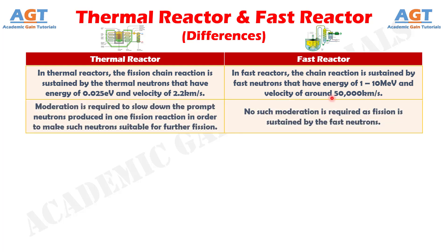Number 2. In thermal reactors, moderation is required to slow down the prompt neutrons produced in one fission reaction in order to make such neutrons suitable for further fission. Whereas, in fast reactors, no such moderation is required as fission is sustained by the fast neutrons.